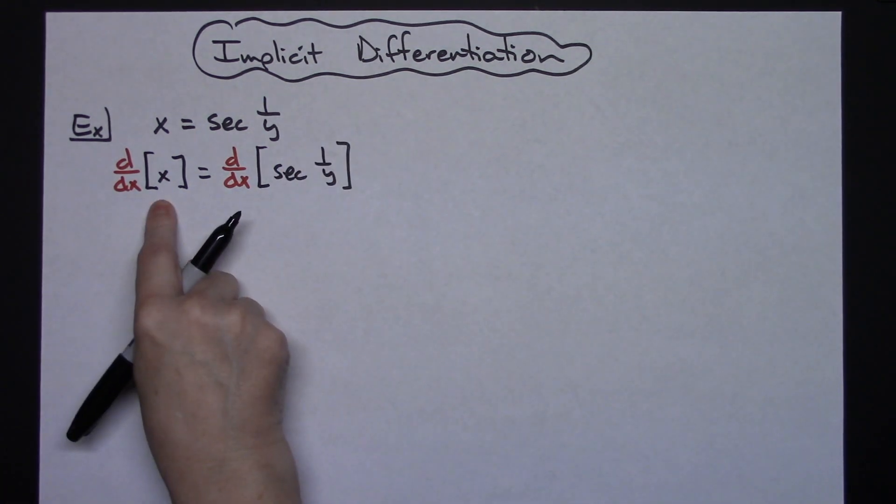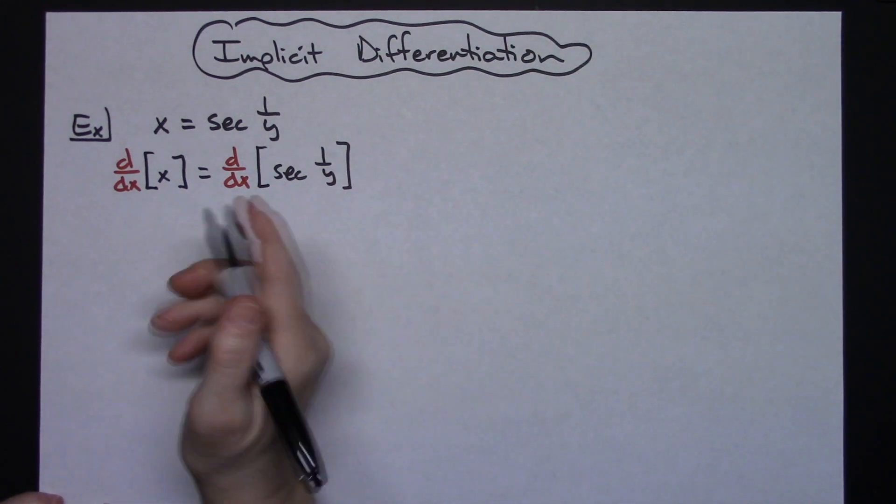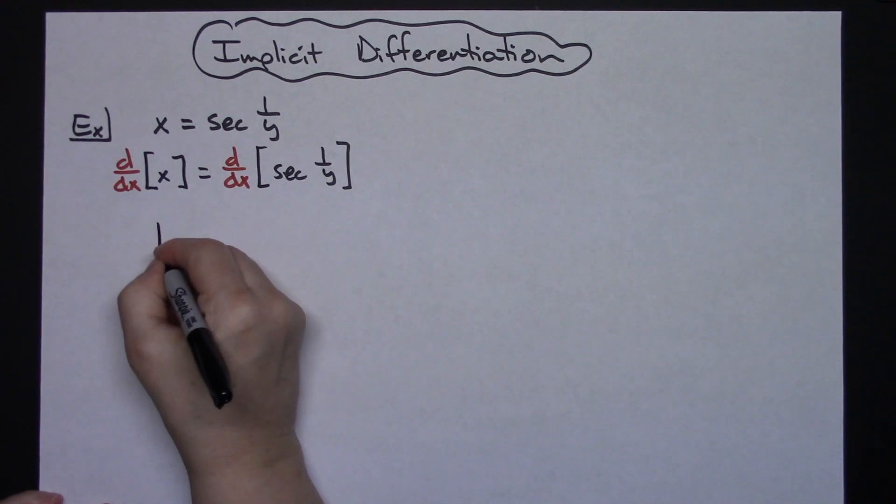When I am doing implicit differentiation and I'm taking the derivative of just a plain x term I'm going to differentiate like normal. So right here on this side I'm going to have a 1.